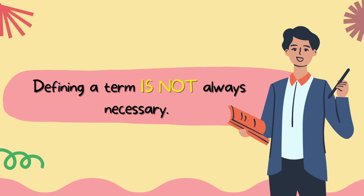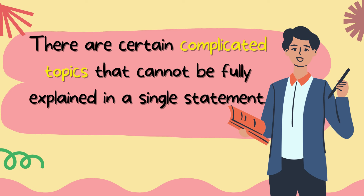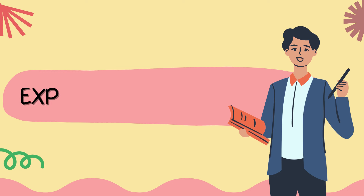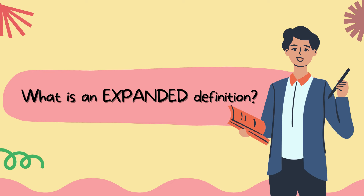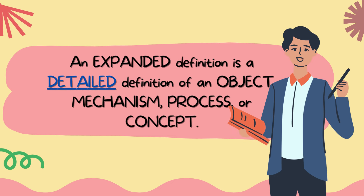Defining a sentence isn't always necessary. However, there are certain complicated topics that cannot be fully explained in a single statement. As a result, we employ the expanded definition of the word. You might wonder what an extended definition is. An expanded definition is a detailed definition of an object, mechanism, process, or concept.